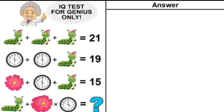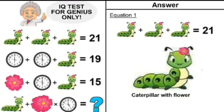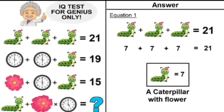Let's take equation number one. If we zoom in, it's a caterpillar with a flower on his head. The equation says: caterpillar with flower plus caterpillar with flower plus caterpillar with flower equals 21. So a single caterpillar with flower is equal to 7.